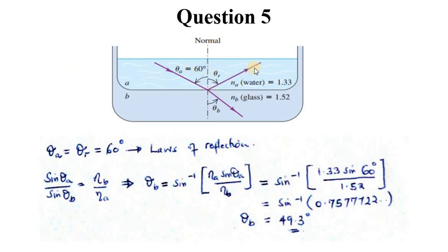From simple rules, we know from laws of reflection the angle of incidence equals the angle of reflection. So it's easier to find theta r just by taking the value of theta a. We say theta a equals theta r equals 60 degrees from the laws of reflection.